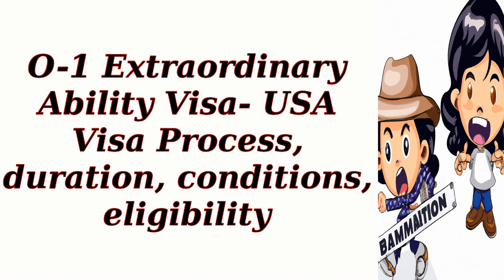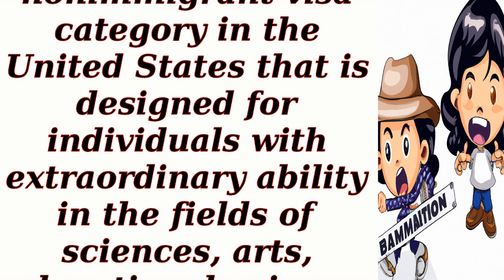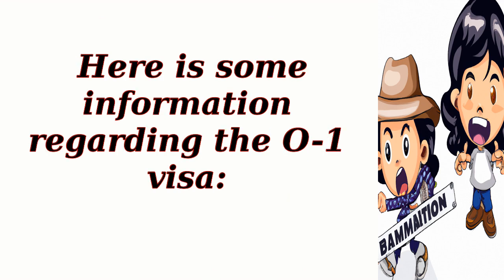The O1 visa is a non-immigrant visa category in the United States designed for individuals with extraordinary ability in the fields of sciences, arts, education, business, or athletics. Here is some information regarding the O1 visa.